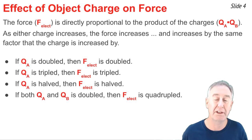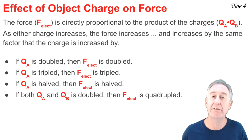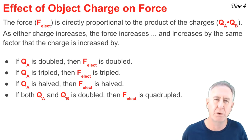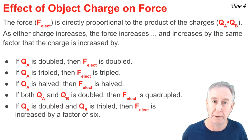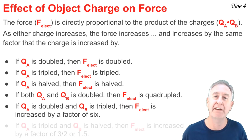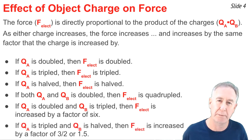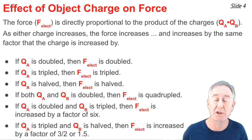If both QA and QB were doubled, then the electric force would quadruple — be four times bigger. If QA were doubled and QB were tripled, then the electric force would be six times bigger. And finally, if QA was tripled while QB was halved, then the electric force would be three halves, or 1.5 times larger.